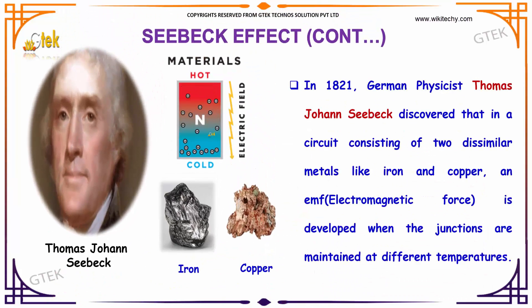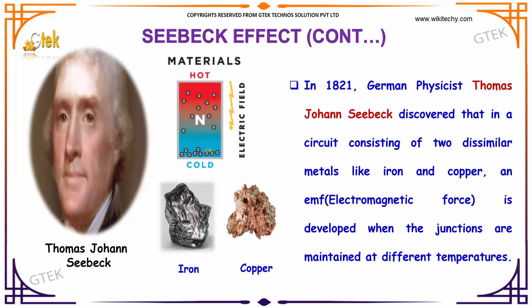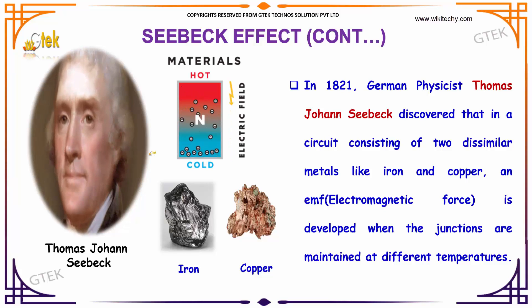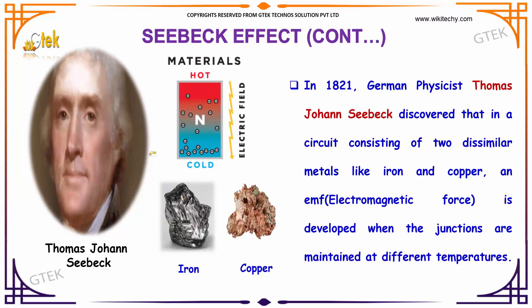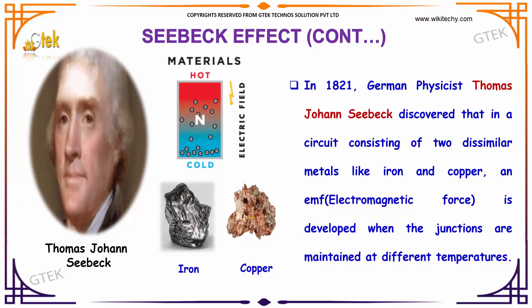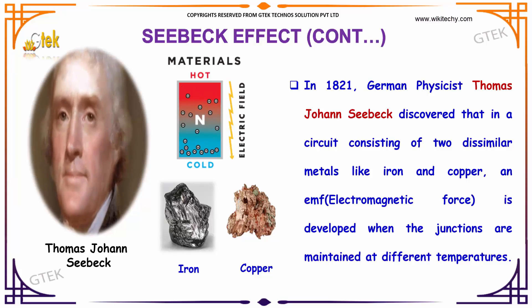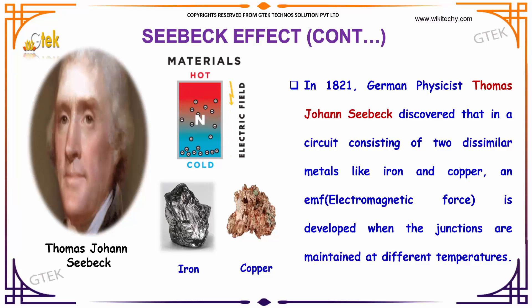A difference in temperature in a metal or material will induce an electric current. In 1821, the German physicist Thomas Johann Seebeck discovered that in a circuit consisting of two dissimilar metals like iron and copper, an electromagnetic force is developed when the junctions are maintained at different temperatures. That's referred to as the Seebeck effect.